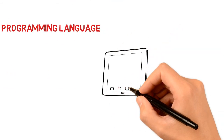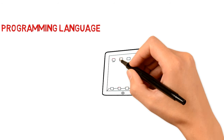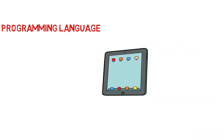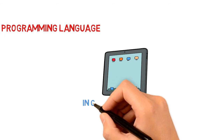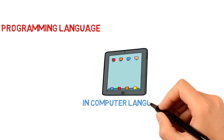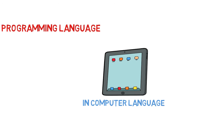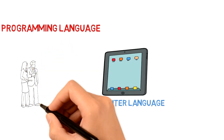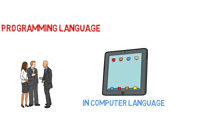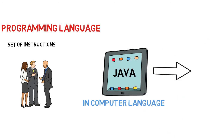Let's talk about programming language first. You use a lot of applications on your computers and mobile phones on a daily basis. Computers are able to run these applications because they are programmed in a computer-understandable language. As we humans need language to communicate with each other, computers also need to be told in a particular way how to perform. So, a programming language is a set of instructions that tells the computer how to give a particular output. Similarly, Java is a set of instructions that a computer understands to give the output.